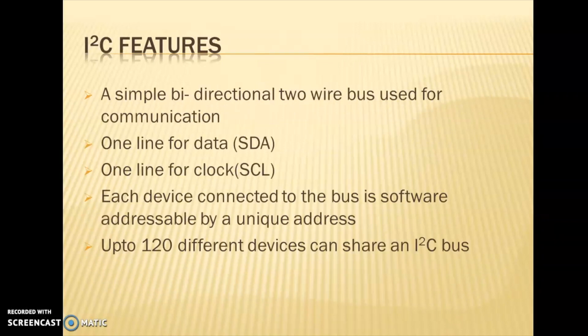The features of I2C: It is a simple bidirectional 2-wire bus used for communication. The two lines used for communication are SDA and SCL. SDA is the data line and SCL is the clock line. Each device connected to the bus is software addressable by a unique address, and up to 120 different devices can share an I2C bus, each with a unique address. The microcontroller communicates with these devices using their addresses.